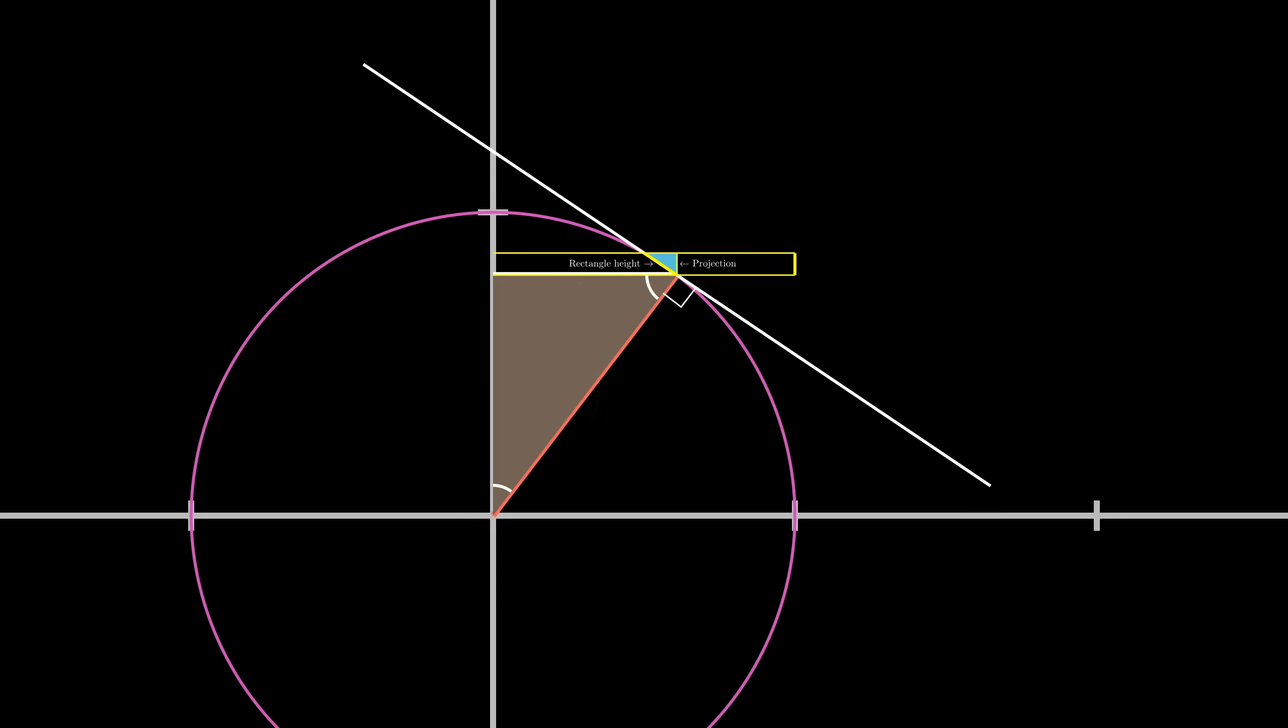Again, it never hurts to give more names to things. Maybe let's call this angle alpha and this other one beta. Since this is a right triangle, we know that alpha plus beta plus 90 degrees must be 180 degrees.